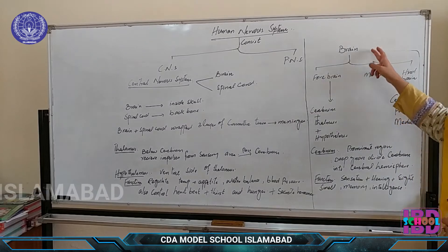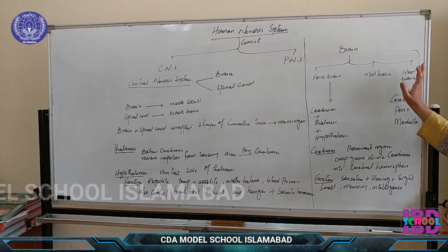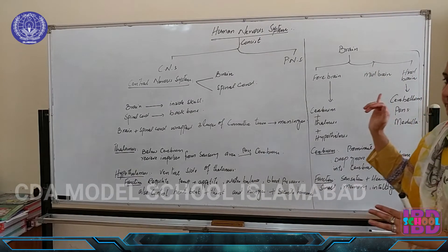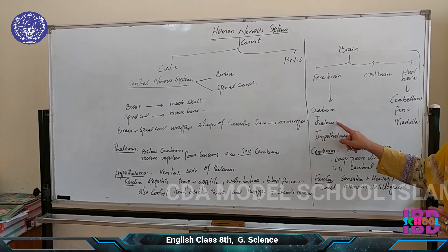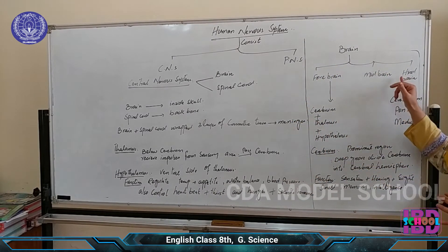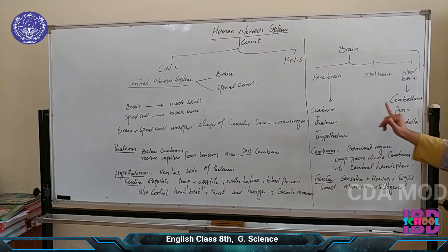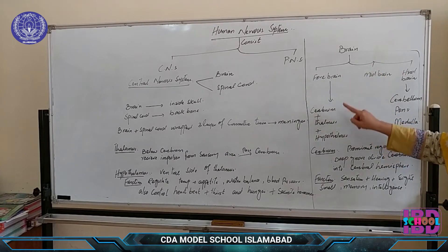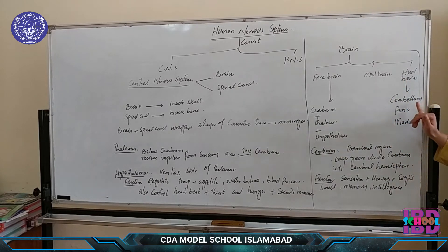There are three parts of the brain: the forebrain, midbrain, and hindbrain. The forebrain consists of the cerebrum, thalamus, and hypothalamus. The hindbrain consists of the cerebellum and the medulla.